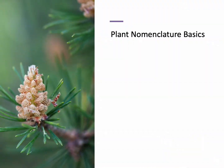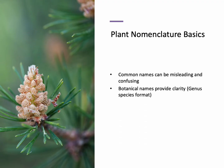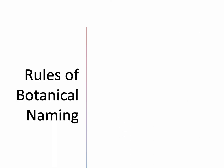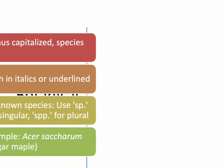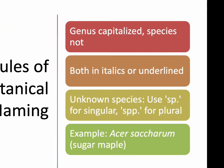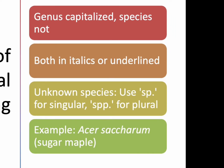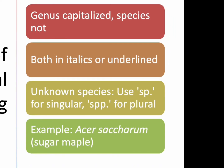We talked about taxonomy and classification. Now let's get into plant nomenclature — the naming of plants. Sometimes common names can be confusing. A Douglas fir is not actually a fir. A bald cypress is not actually a cypress. Seripine — definitely not a pine. That's why we rely on botanical names, made up of the genus and species. The rules: genus is always capitalized, species is lowercase, and both are italicized or underlined. For example, Acer saccharum — sugar maple.